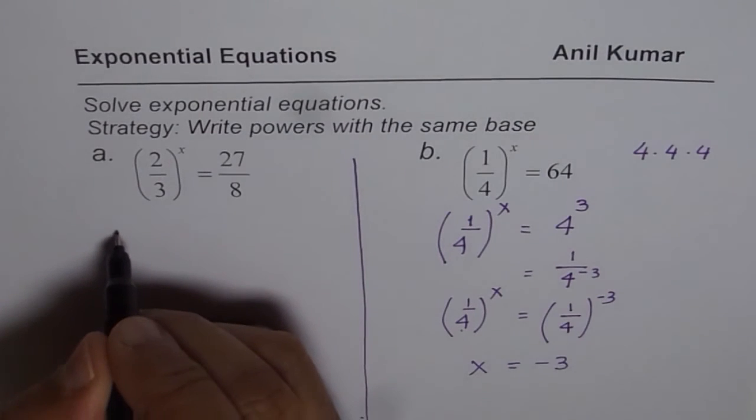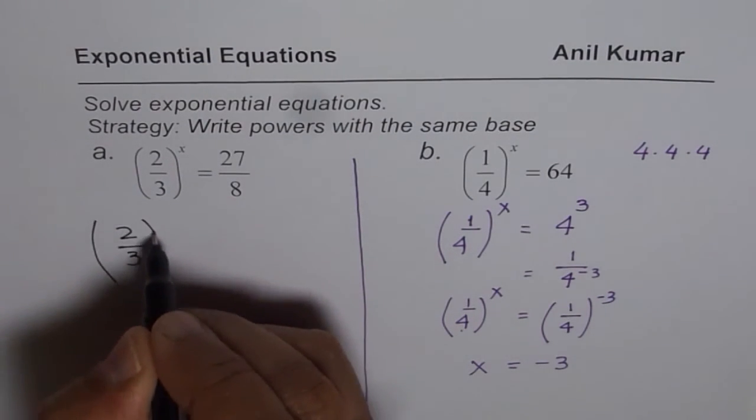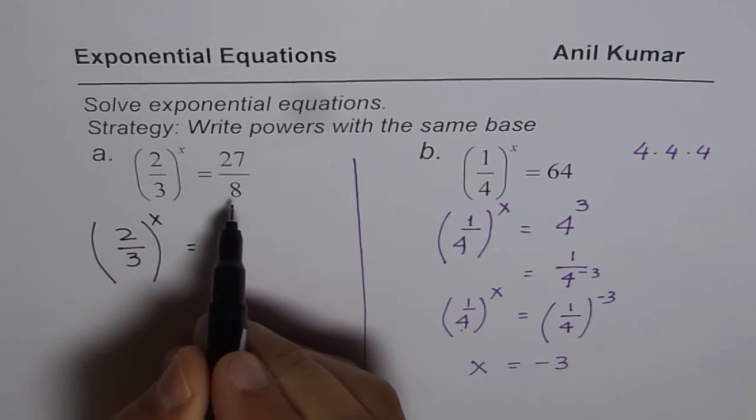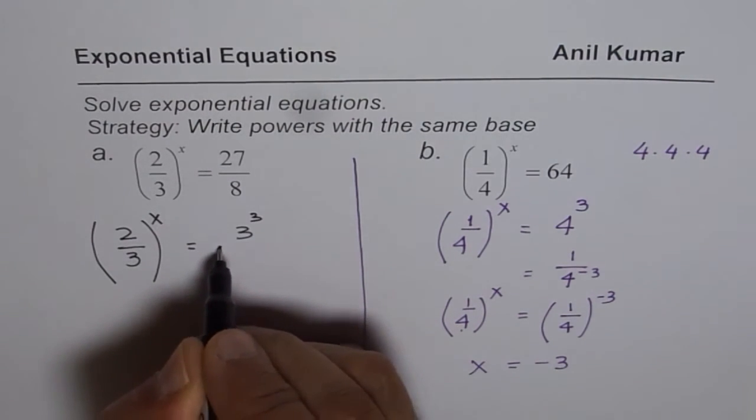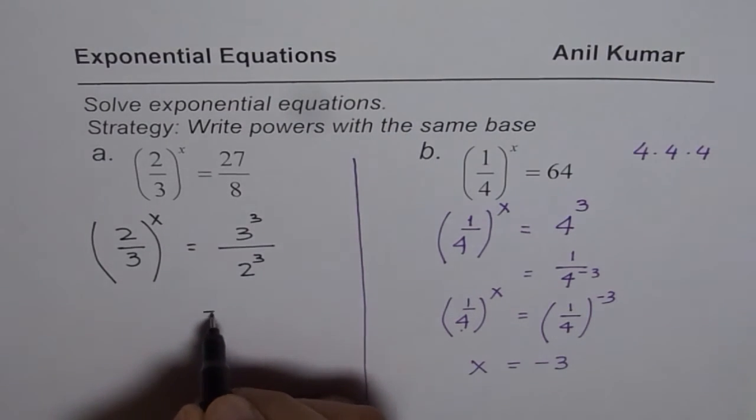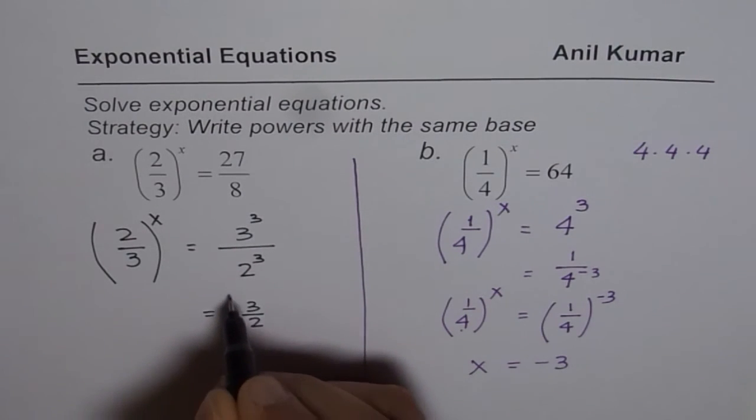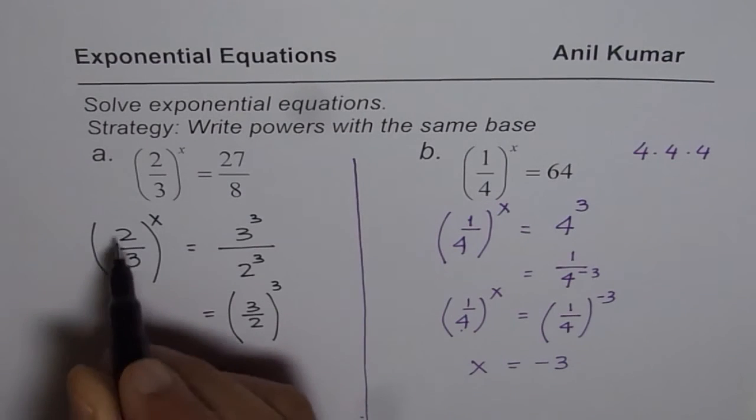On the left side we have 2 over 3 to the power of x. We need to find what x is. On the right side we have 27 and 8. 27 could be written as 3 cube and 8 can be written as 2 cube. Now we can write this as 3 over 2 whole cube, right? What we really need is 2 over 3.